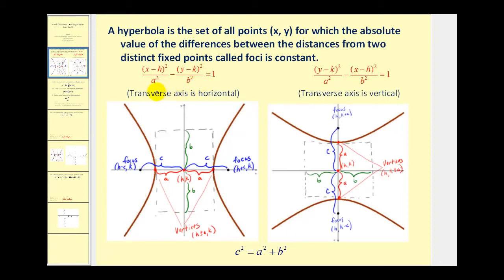Once we determine the value of a and b, we can determine the value of c by using the equation c squared equals a squared plus b squared. Once we determine what type of transverse axis the hyperbola has and the center, and then a, b, and c, we can make a nice graph.